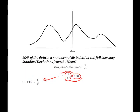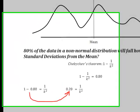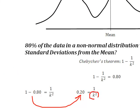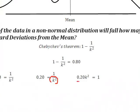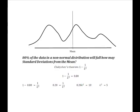Now I'm going to simplify this a little bit. I am down to 0.20 equals 1 over k squared. Now I've got to get this k squared out of the bottom, so I'm going to multiply both sides by k squared. By multiplying both sides by k squared, I end up with 0.20 k squared equals 1. Now I'm going to divide both sides by 0.20 in order to isolate k squared on the left-hand side of the equation.